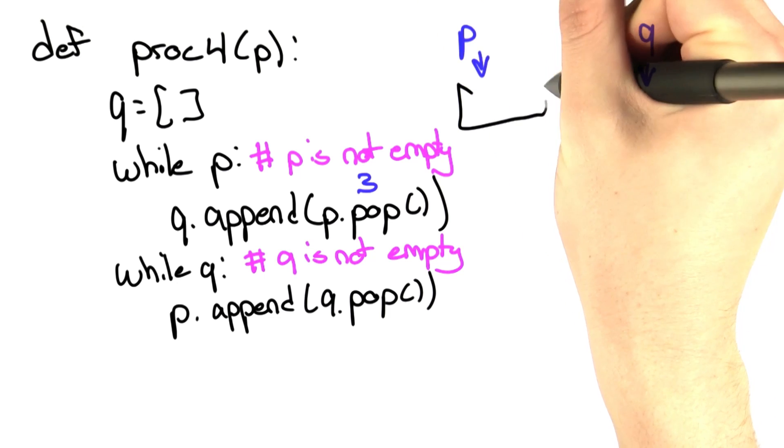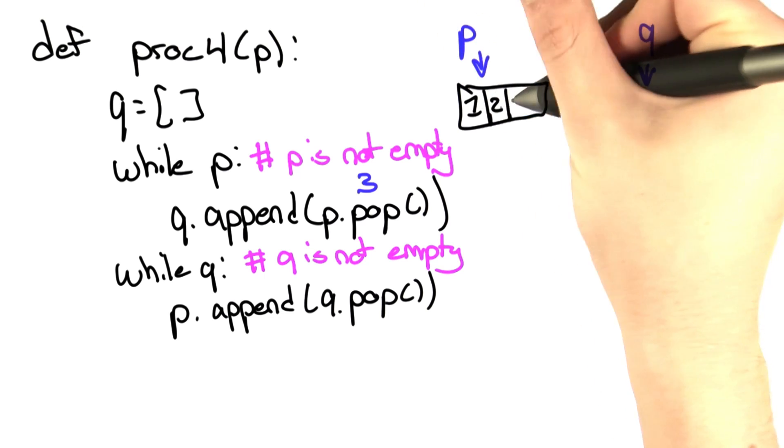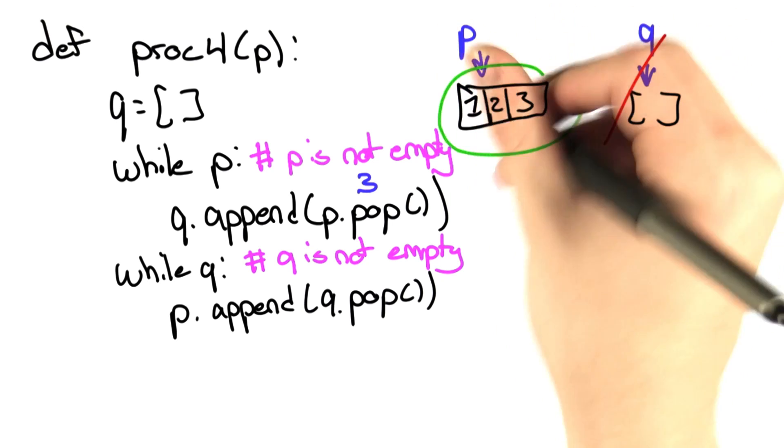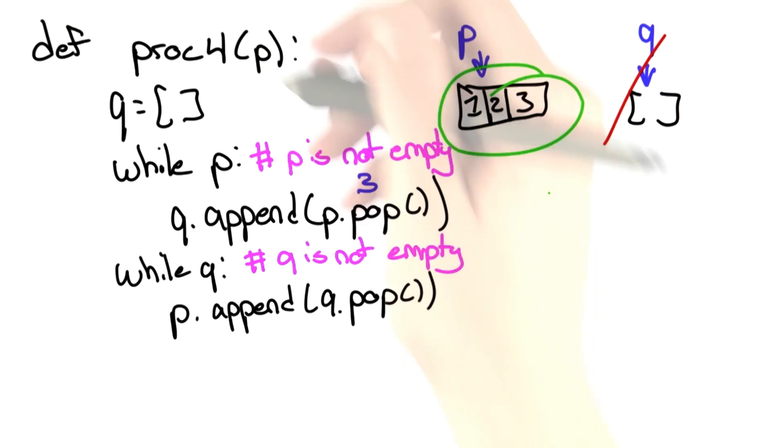Then we're going to reverse the process here. If I undo what I just did, the end result is we have the original list, and we have an empty list, although this doesn't matter. The main point is that we still have our original list. This one is good.